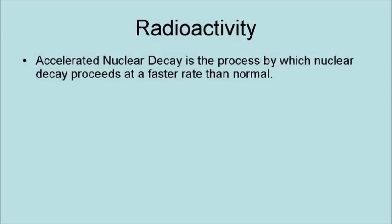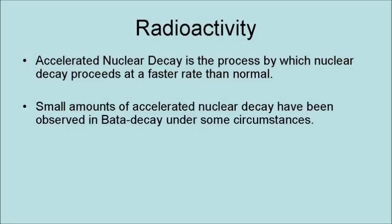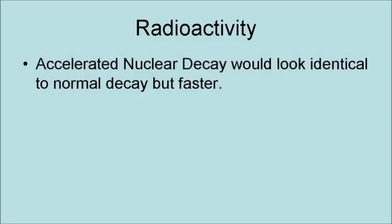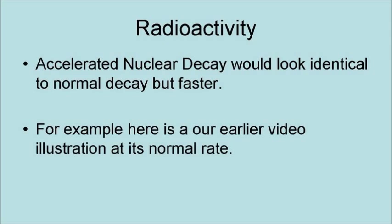Accelerated nuclear decay is the process by which nuclear decay proceeds at a faster rate than normal. Small amounts of accelerated nuclear decay have been observed in beta decay under some circumstances. While accelerated alpha decay has never been directly observed, evidence for it does exist in the retention of radiogenic helium by zircon crystals. Accelerated nuclear decay would look identical to normal decay, but faster.